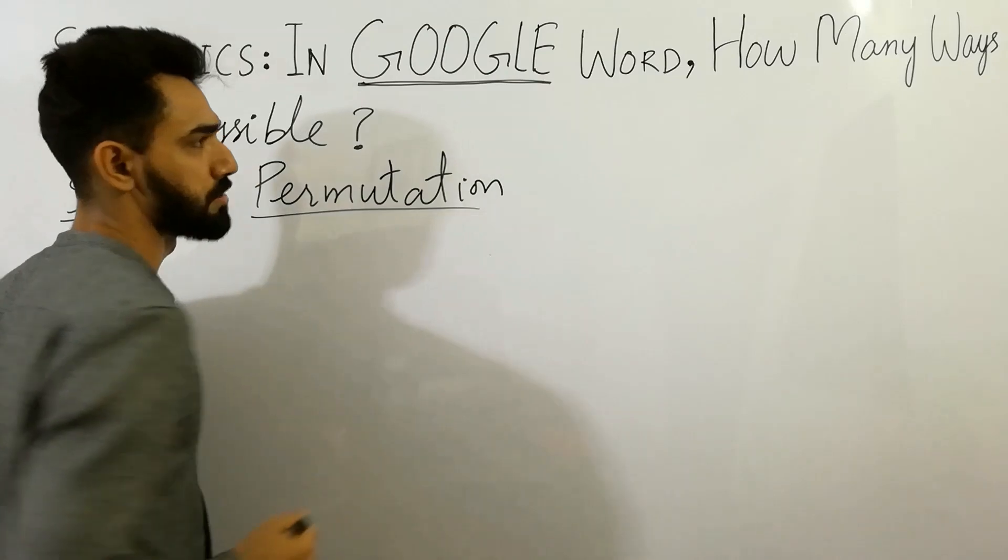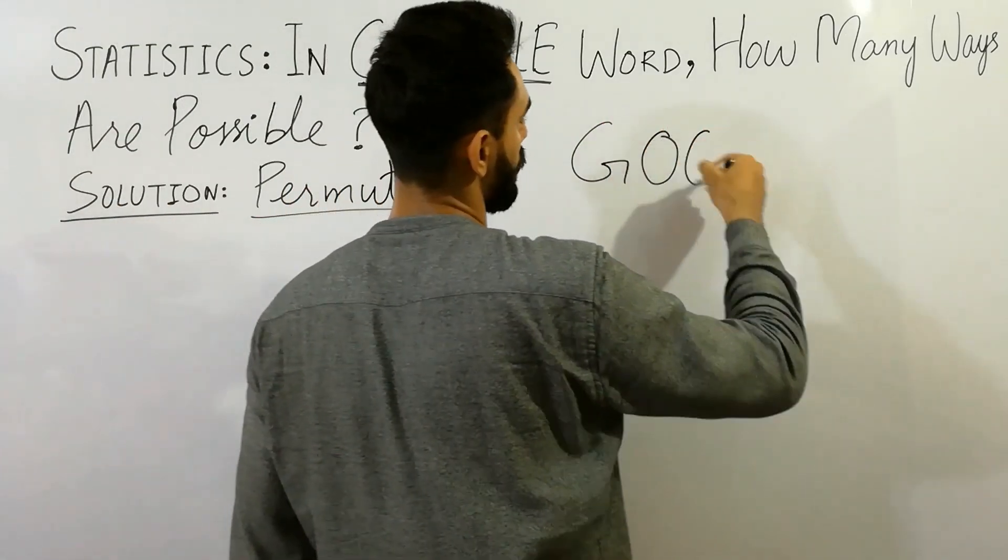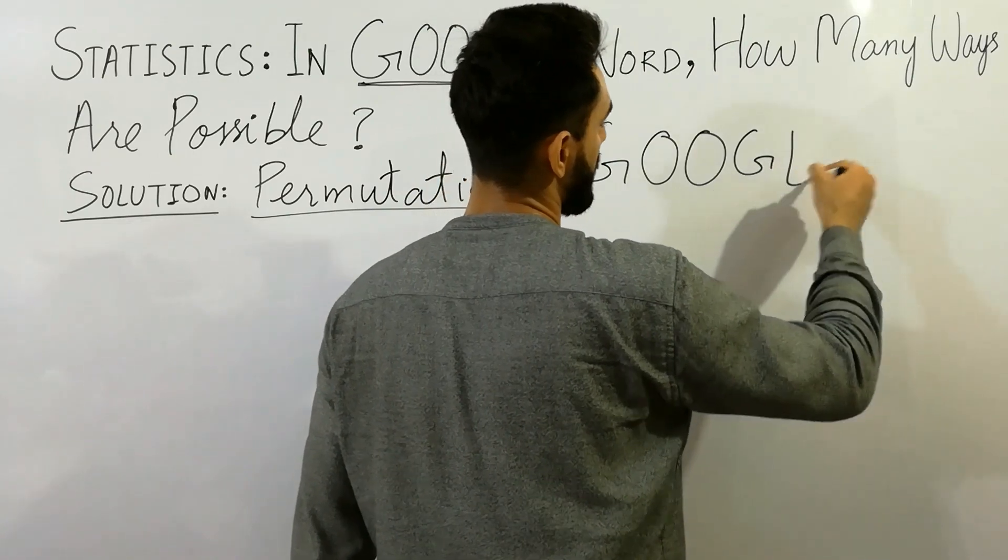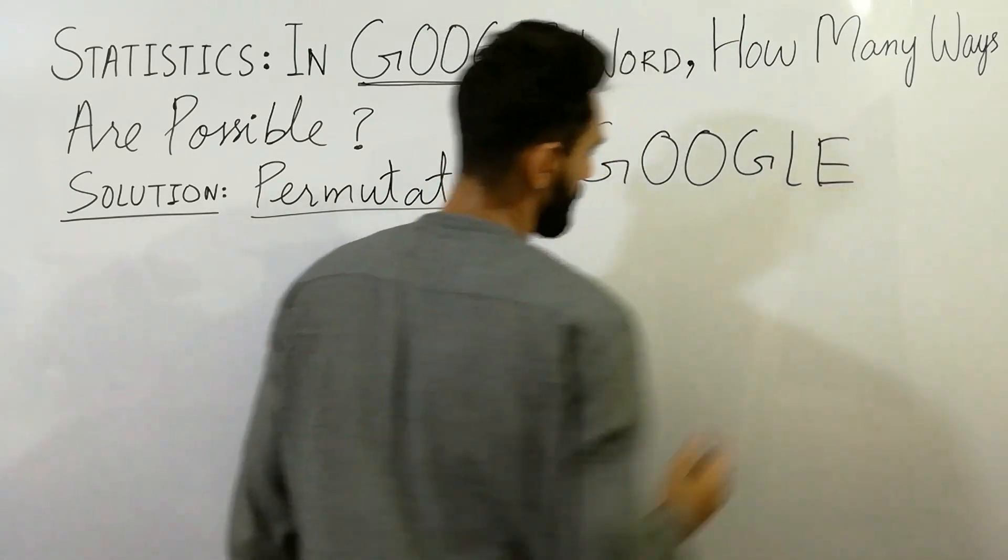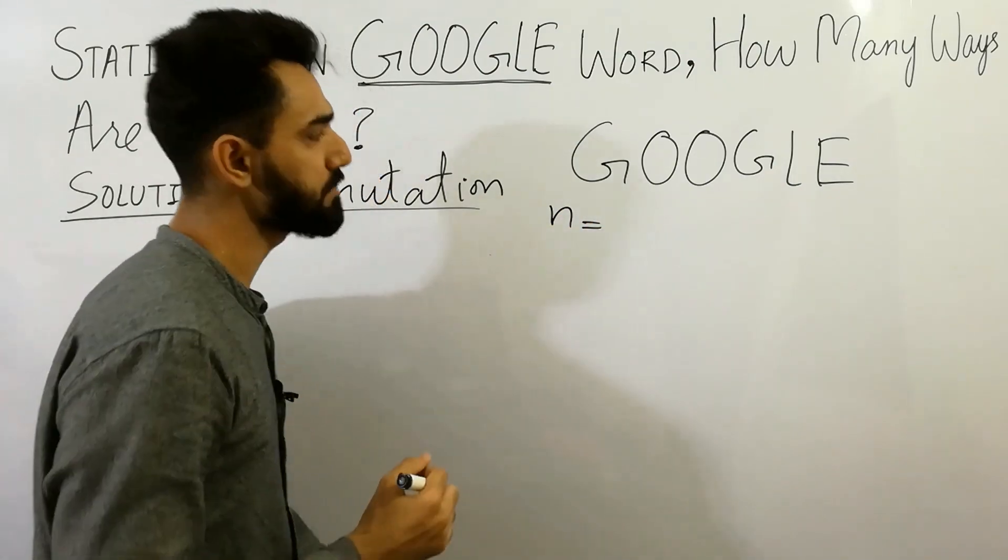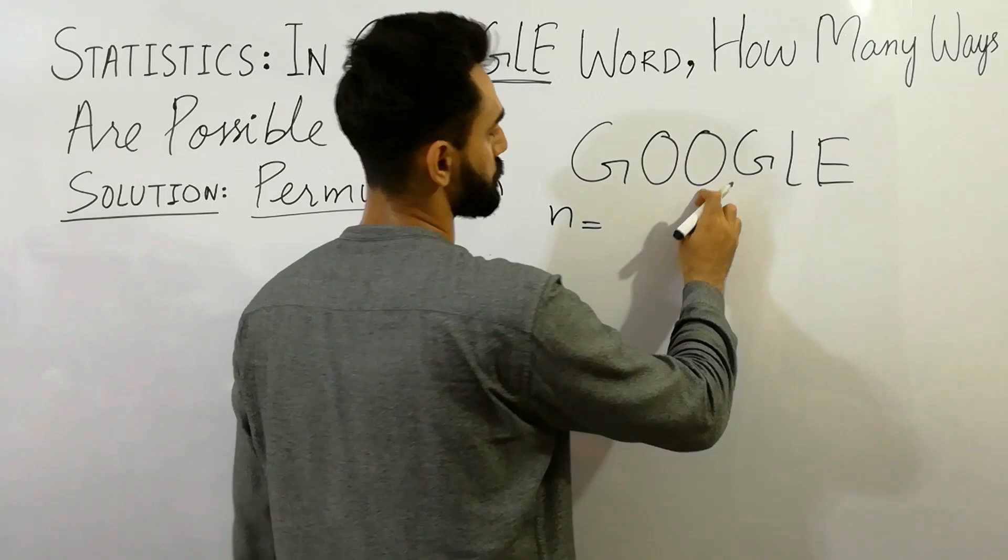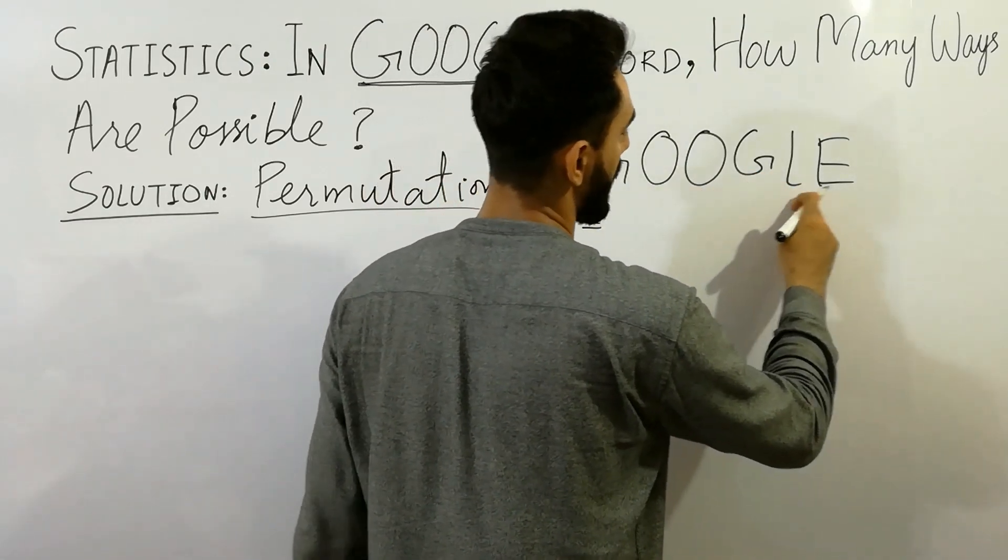Very easily. Let's take the Google Word: G, double O, G, L, E. First of all, count the values here, N. The N values are here, the number values: 1, 2, 3, 4, 5, 6.